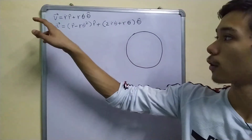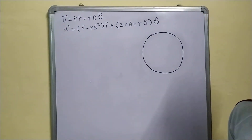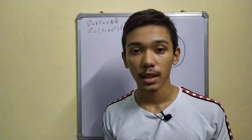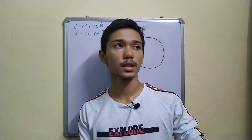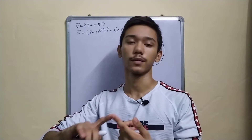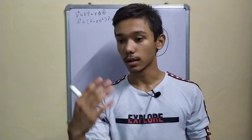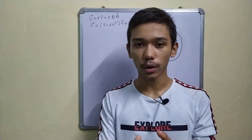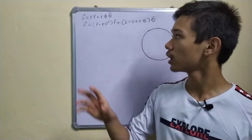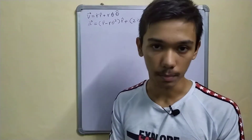Hello everyone. In our previous video we developed the formula for velocity and acceleration in the polar coordinate system, and now it's time to put our skills to the test by understanding circular motion — the circular motion you see all around us, like motion of a fan, wheels of a car, children going on a merry-go-round. What's really important in this video is that we learn how to use these equations in a practical example.